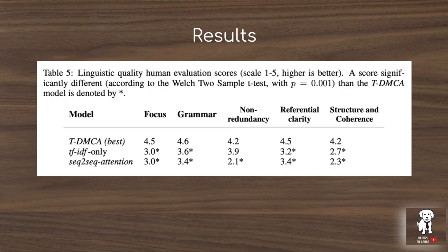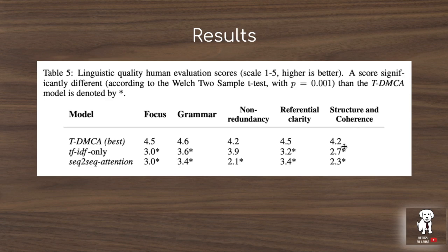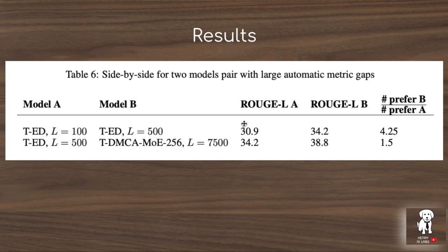This table shows the results of human evaluation on these summarizations, comparing the transformer with compressed memory and decoder-only architecture against the extractive-only TF-IDF method and the LSTM encoder-decoder sequence-to-sequence model. Evaluation dimensions include focus, grammar, non-redundancy, referential clarity, and structure and coherence, with the transformer with compressed memory performing best. The table also shows a comparison of models with different automated scores and how they correspond to human evaluation, demonstrating correlation between human evaluators and automated metrics.